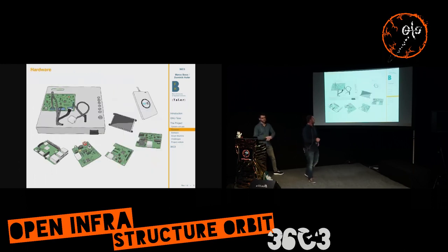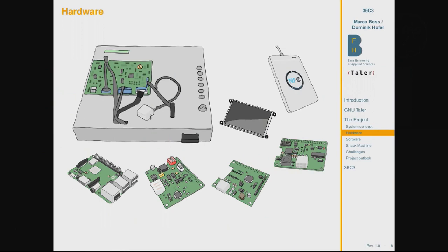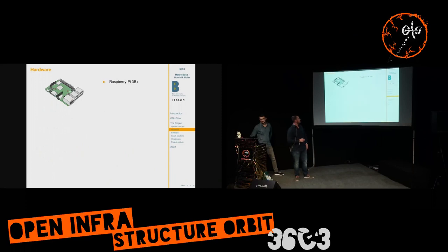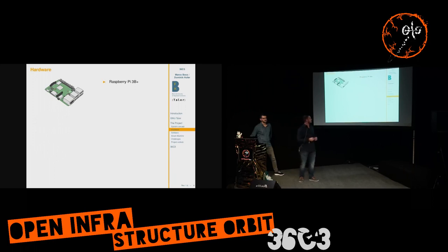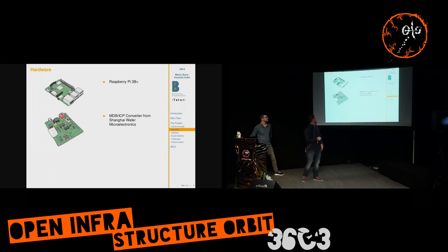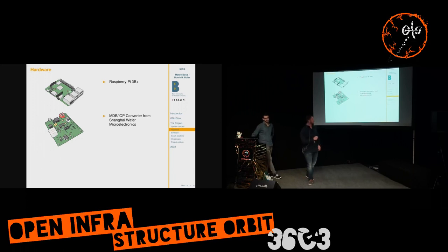To get this task done we had a lot of hardware: some MDB converters, a display, an NFC reader, a test bed, and a Raspberry Pi. We used a Raspberry Pi 3B Plus because we used it in the course and it's easy for fast prototyping and development. We also had an MDB ICP converter from Shanghai Wiking Microelectronics — we tried three different products but this one was the easiest to implement, so we chose it.